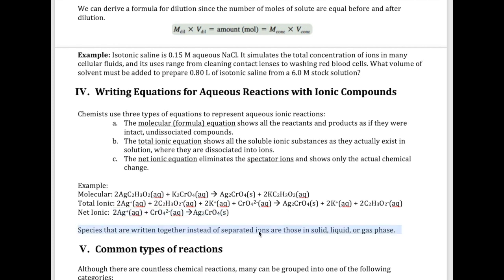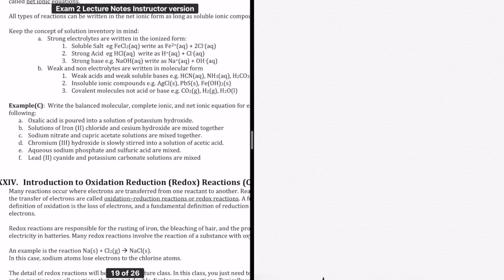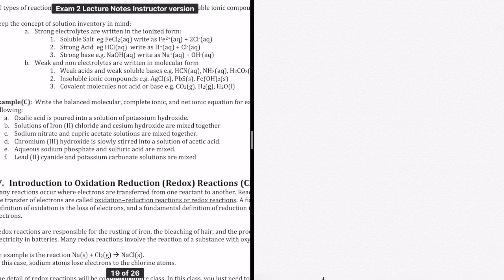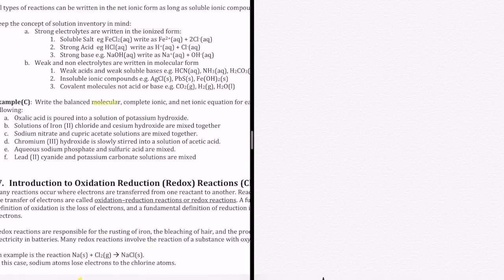A quick note: in addition to solids, the other species that you want to write together and not separate are species in the liquid state and species in the gas phase. Let me show you an example of how to complete a question where you have to write all the different forms of the equation—the molecular, the complete ionic, and the net ionic equation. I'm going to pick one of these: iron(II) chloride and cesium hydroxide.